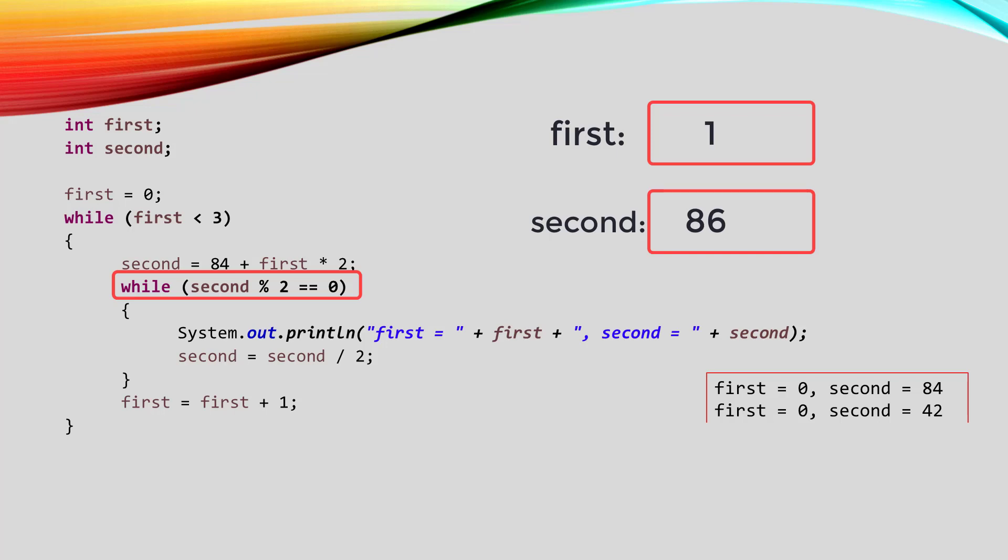Then we start the inner loop again. It'll do second mod two, and since 86 is evenly divisible by two, that will give us a zero, so the condition will be true. When we go inside that loop, the print line will print out the output using the values in first and second, and then it will take the value of second, divide it by two, and get 43, and store that into second.